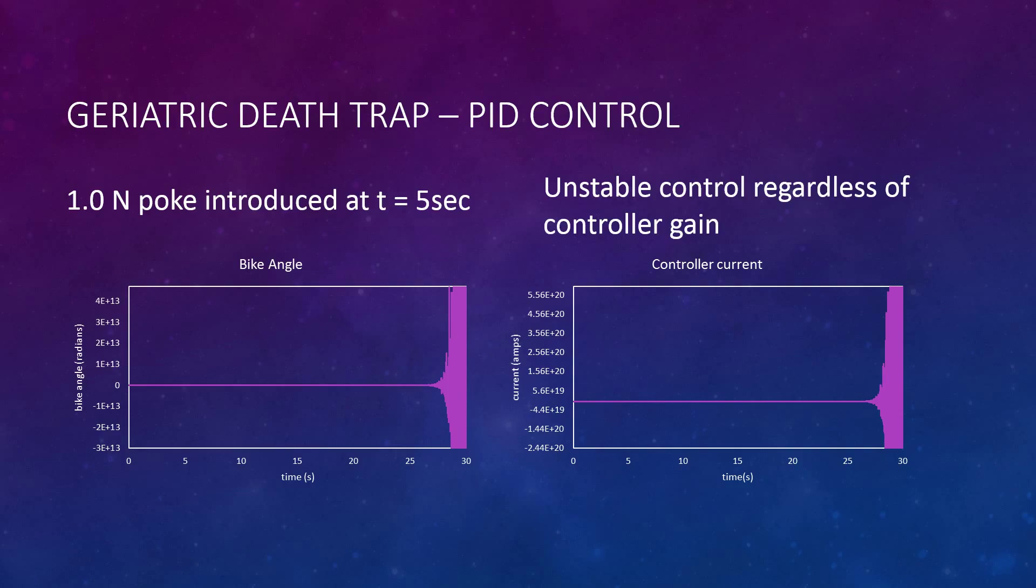And basically what we imagine happening here is the bike slamming the rider back and forth into the ground. And while it's doing this, it's also pulling 5 times 10 to the 20 amps, which is not a reasonable or safe number. So we named this controller the Geriatric Death Trap, and we do not recommend it for Dr. Henrikun.